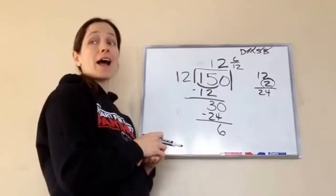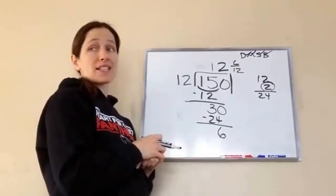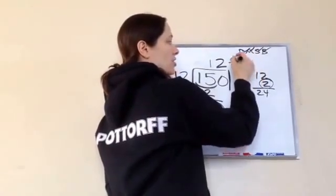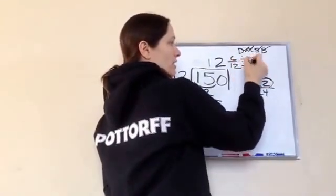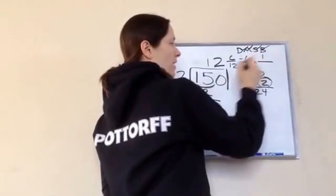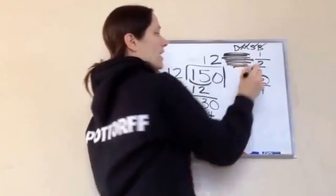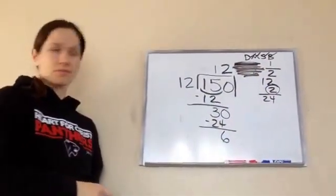Will that reduce? Yes. Think high. What number will go into both 6? 6. Very good. So we're going to divide by 6 to reduce the 6 twelfths. 6 divided by 6 is 1, 12 divided by 6 is 2. So the answer is 12 and a half. Final answer.